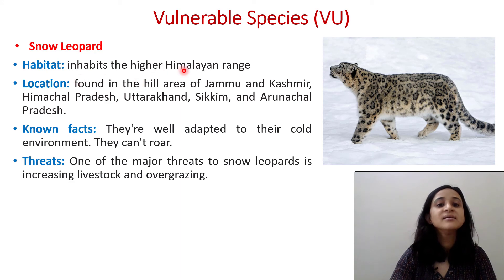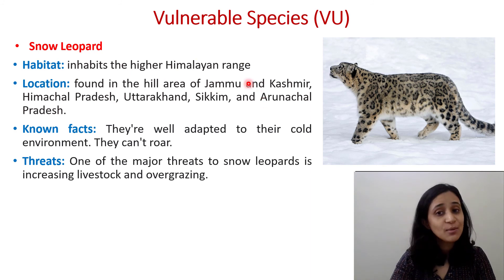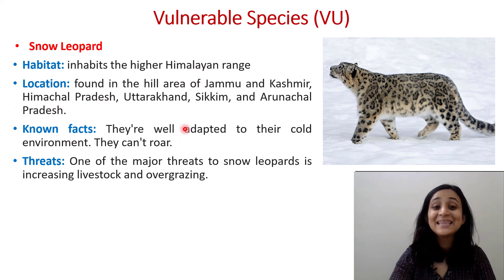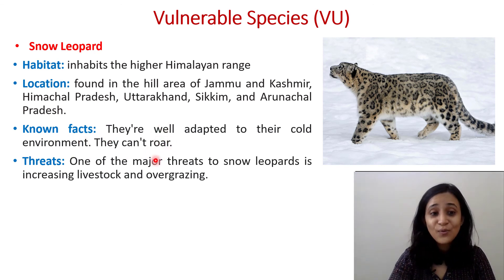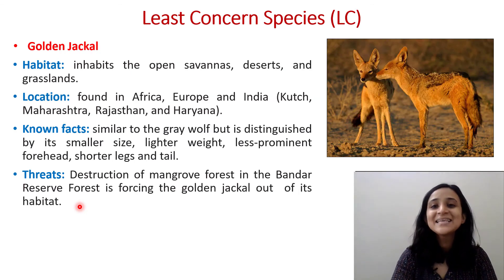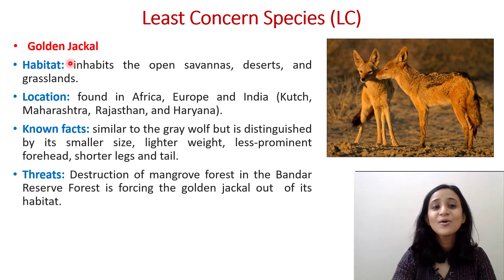Next is the Snow Leopard, also under Vulnerable. It inhabits the higher Himalayan range, found in Jammu and Kashmir, Himachal Pradesh, Uttarakhand, Sikkim, and Arunachal Pradesh. Snow leopards are well adapted to their cold environment, and importantly, they cannot roar. Threats include increasing livestock and overgrazing.